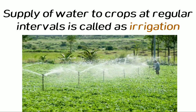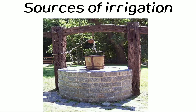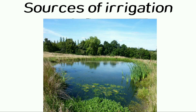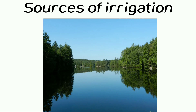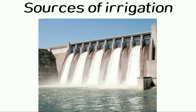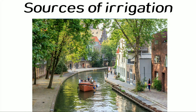Now let us take a look at some sources of irrigation: wells, tube wells, ponds, lakes, rivers, dams, and canals are some of the sources of irrigation.